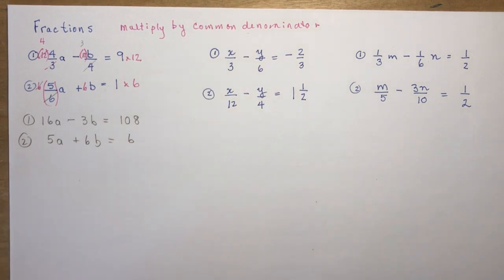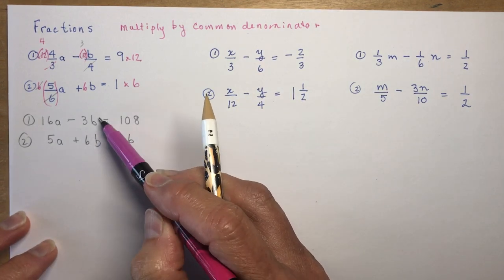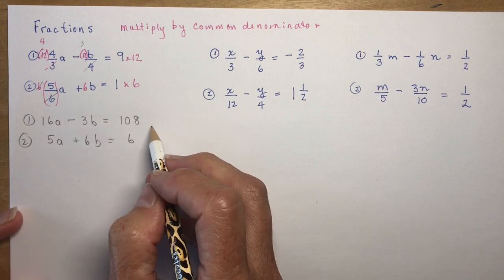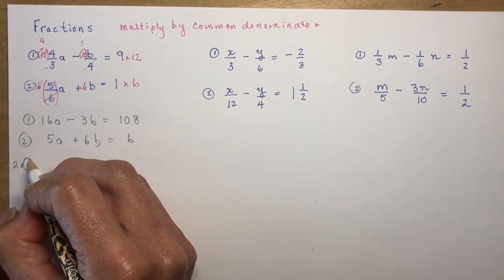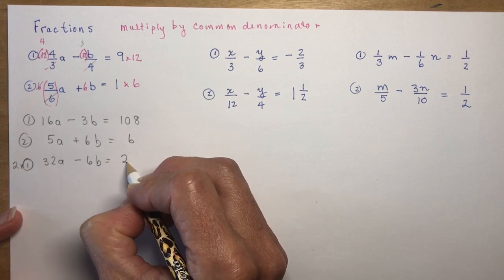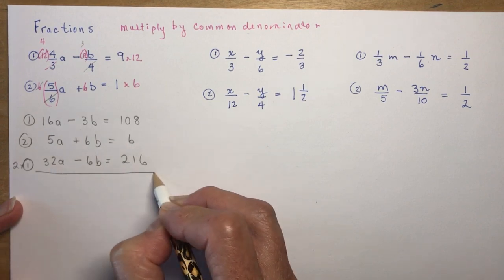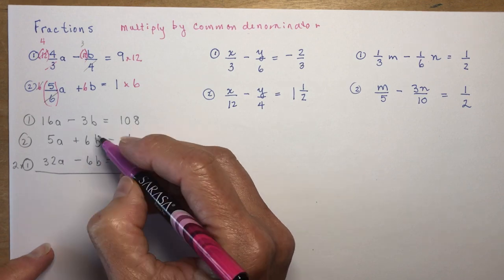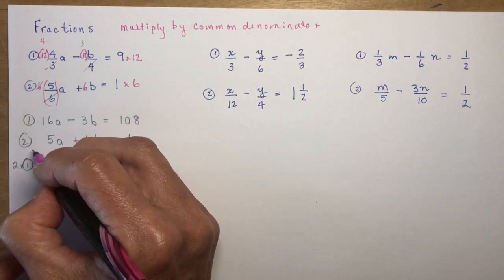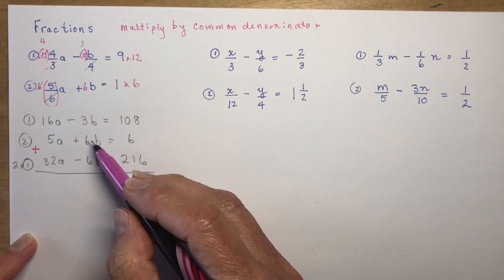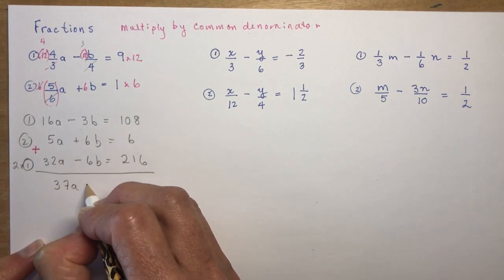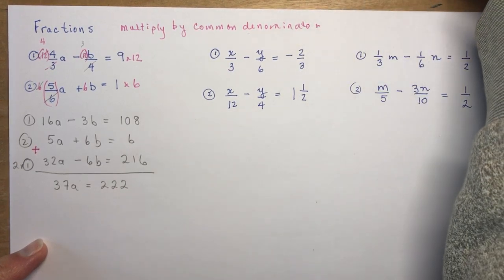The easiest variable to eliminate is b. If I multiply equation 1 by 2, I'll have 6b, then I can add and eliminate. Equation 1 times 2 gives 32a minus 6b equals 216. The b-coefficients have different signs, so I add. 32a plus 5a gives 37a equals 222.